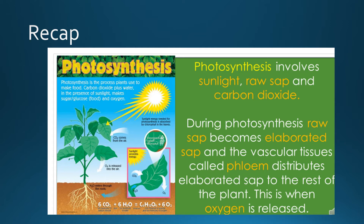During photosynthesis, the raw sap that the plants have absorbed and distributed to all parts of the plant is going to become elaborated sap. This elaborated sap is going to be distributed by the vascular tissue that we call phloem to the rest of the plant. This is where oxygen is released. The plant takes CO2 and gives out a larger quantity of O2, which is oxygen.